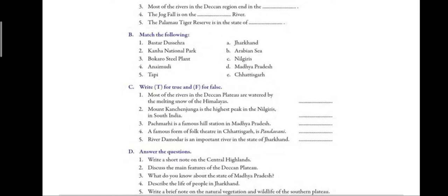Next, true and false. First: most of the rivers in the Deccan plateau are watered by the melting snow of the Himalayas. The answer is false, because most of the rivers of the Deccan plateau are rain fed — when the monsoon comes, rain fills the rivers, and after the monsoon is over, the rivers gradually dry up.